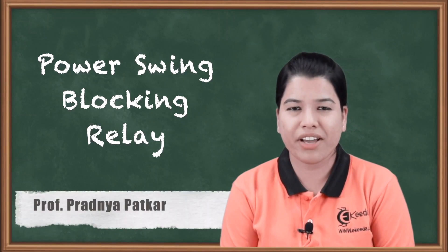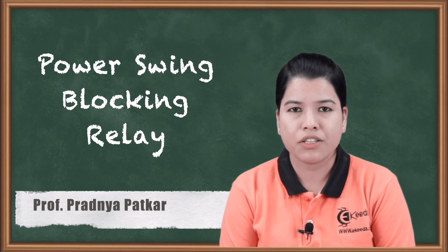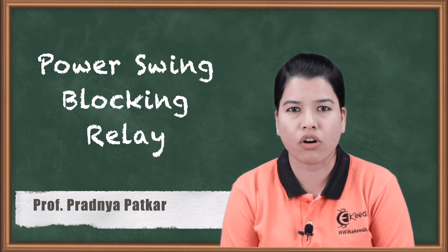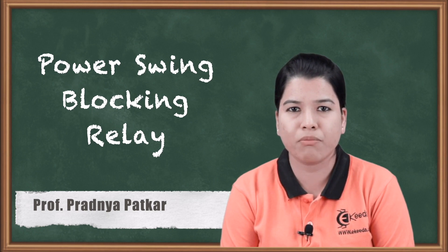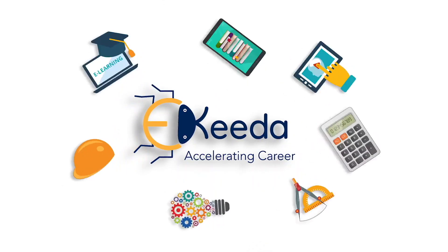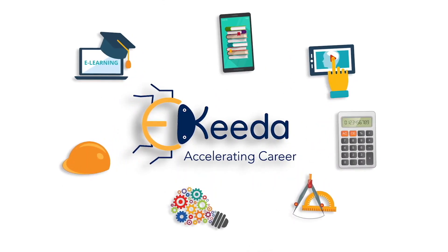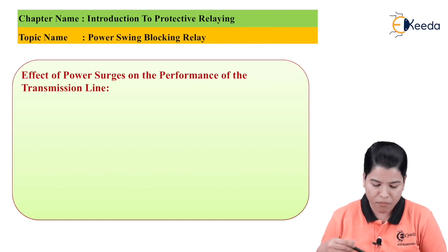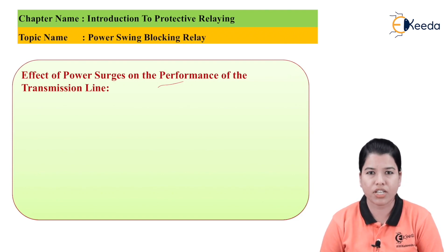Hello friends. In this video we are going to study about the working of the relay to block the power swings. Basically, when the fault is cleared by the circuit breaker, some amount of disturbance takes place due to which power swings occur. We are also going to study about the effect of power surges on the performance of the transmission line.